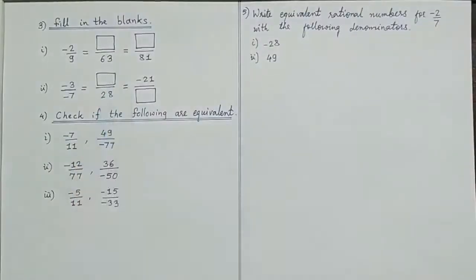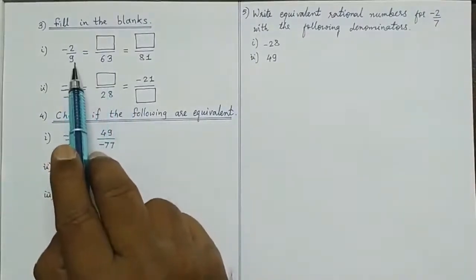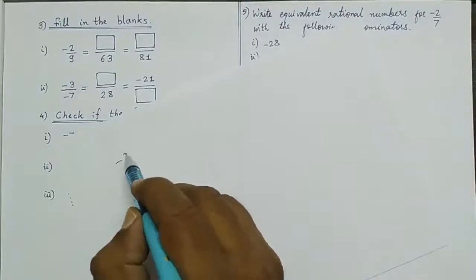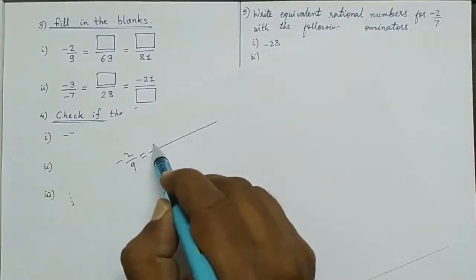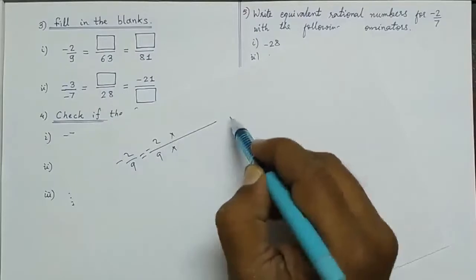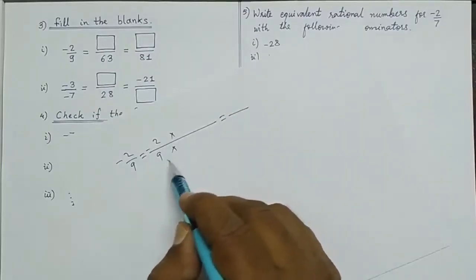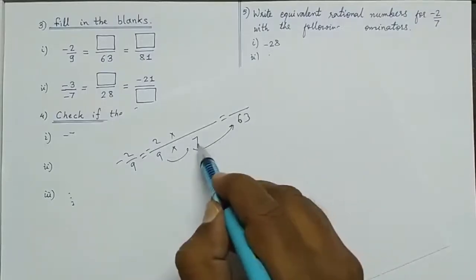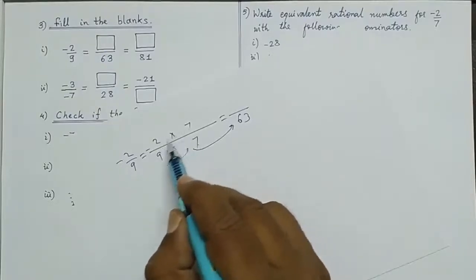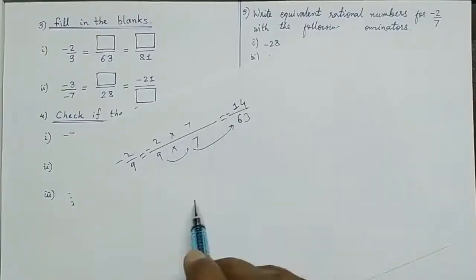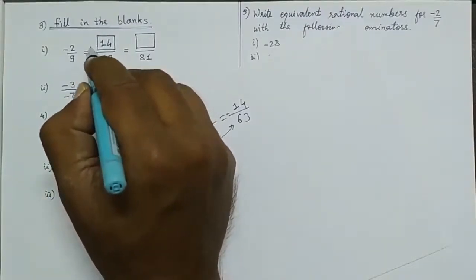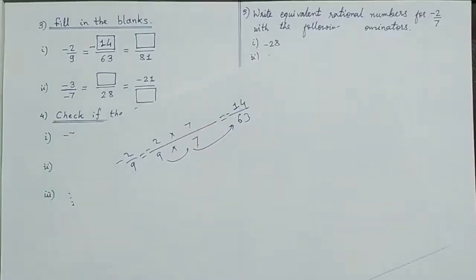Fill in the blanks. Minus 2 upon 9 equals equivalent fraction with denominator 63. We know 9 into 7 is 63. So we multiply 7 to numerator as well: 2 into 7 is 14, and the minus stays as it is. So the answer in the blank is minus 14.